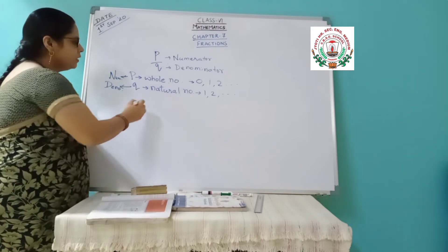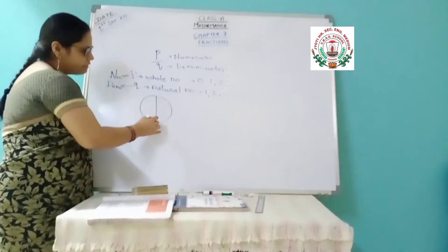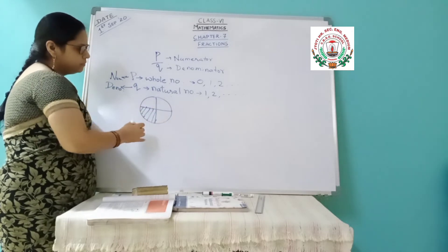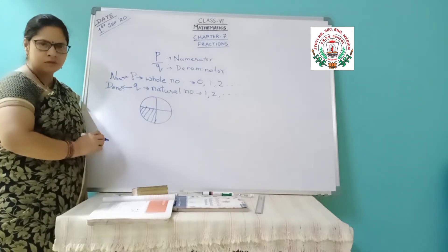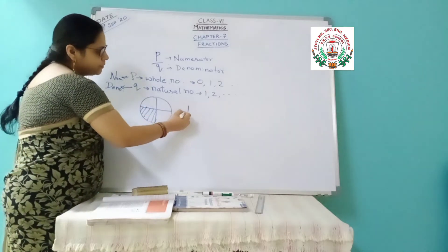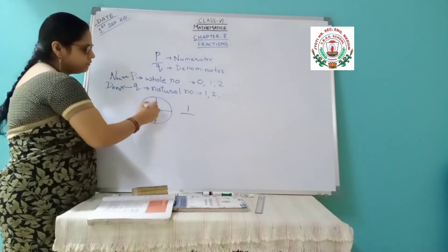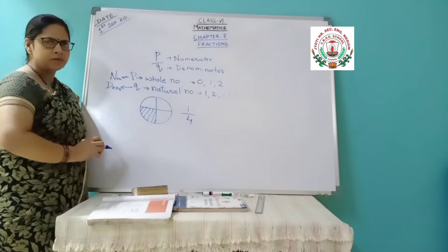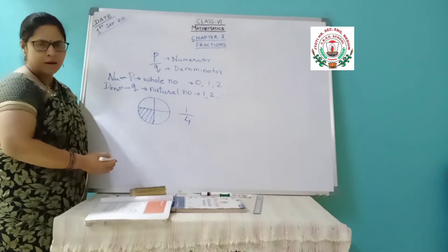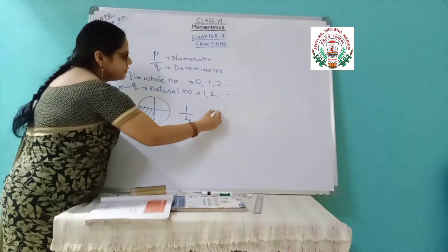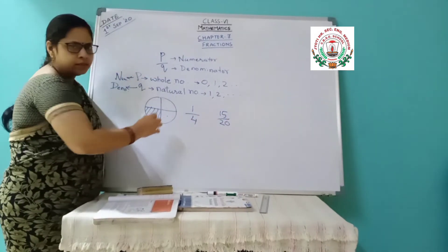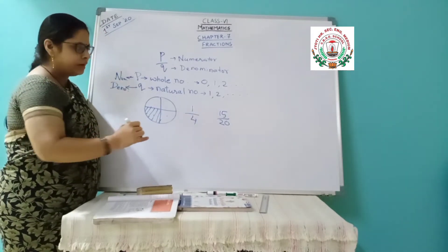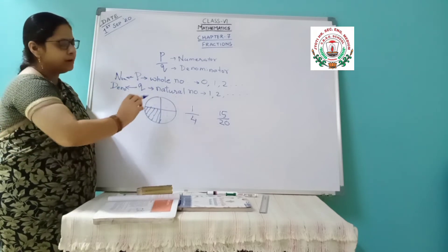Now what is this fraction actually? Suppose I take a circle, divide it into 4 equal parts and shade any 1 part. If I ask what is the fraction of the shaded part — how many parts are shaded? 1 part shaded out of total 4 parts. So 1 out of total 4 is shaded, and this is the fraction. Like suppose marks — how you are getting marks in any exam. Suppose you got 15 out of 20. The total marks you write in the denominator, and how much you scored you write in the numerator.